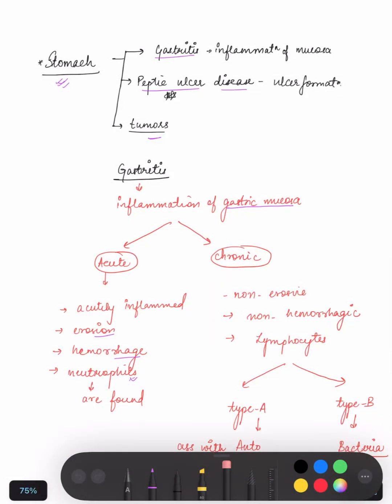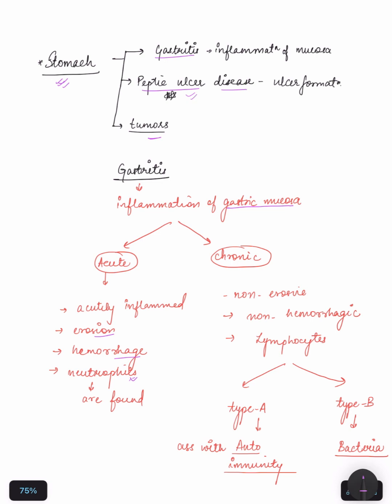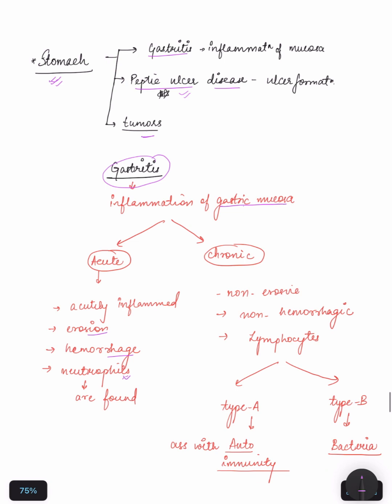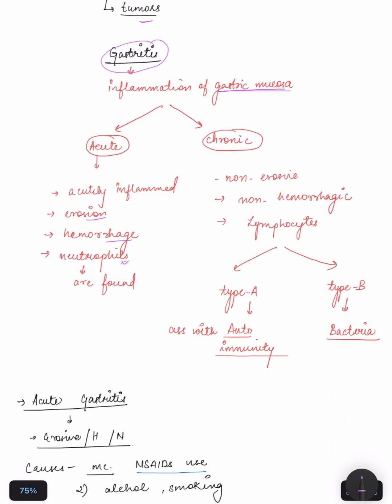Hello everyone, welcome back to my channel. Today we are going to study stomach diseases. First is gastritis, second is peptic ulcer disease in which ulceration takes place, and third is tumors. First, we are going to study gastritis, which is an inflammation of the gastric mucosa and it can be acute and chronic.